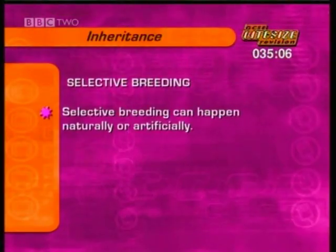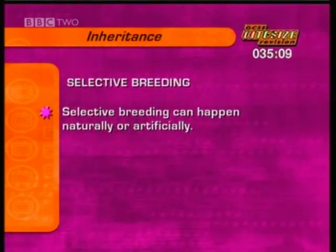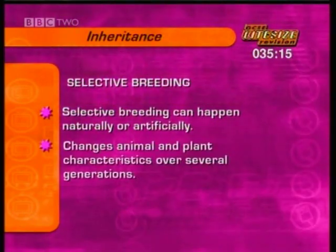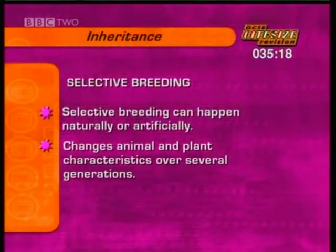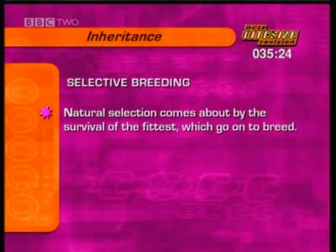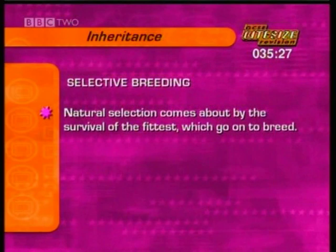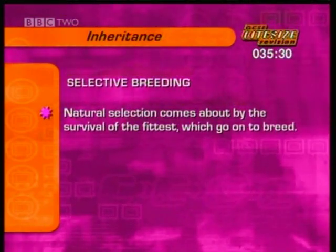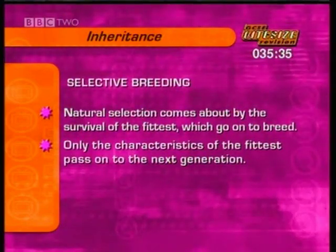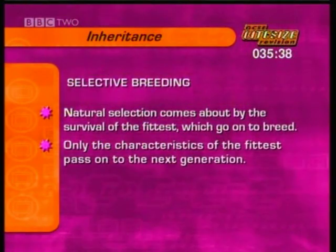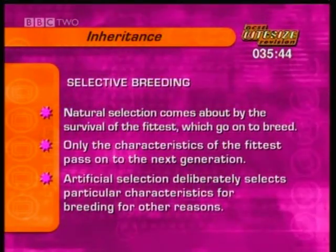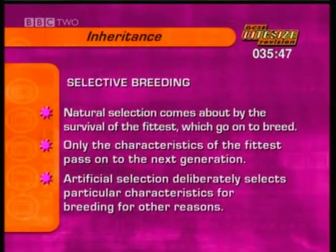Creating specific characteristics in animals and plants is not new — selective breeding can happen naturally or artificially. For hundreds of years, humans have used selective breeding to change the characteristics of animals and plants over several generations. In the natural world, only the fittest individuals survive to breed, ensuring only the genes and characteristics of these fittest individuals get passed to the next generation. Artificial selection deliberately selects particular characteristics for breeding for reasons such as agriculture, food production or economic gain.